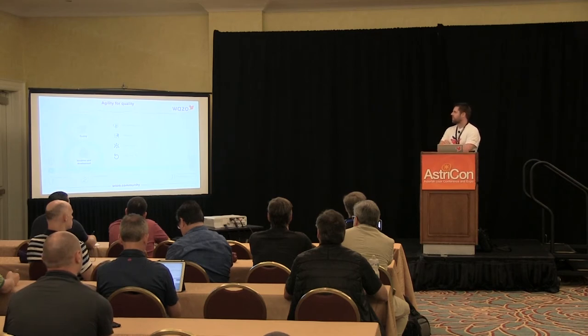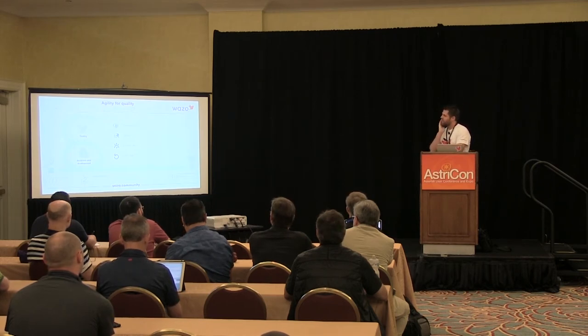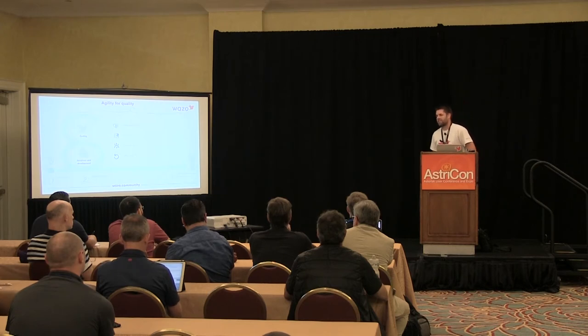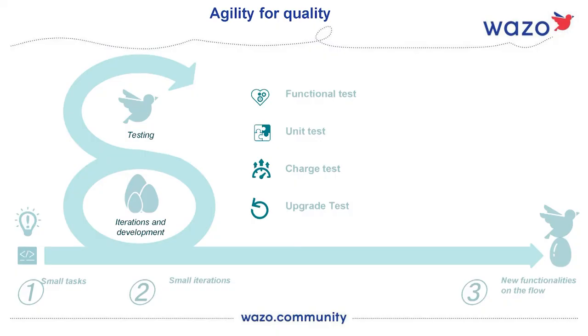We believe open source is a development model. Sometimes people say, oh, it's open source so it's not as robust as a commercial product. But at WAZO, we don't believe this. We have many tests and we love quality. We have a testing platform with functional tests, unit tests, charge tests, and upgrade tests. We release a new stable version of WAZO every three weeks. We have three-week sprints, and we started this development method six or seven years ago.